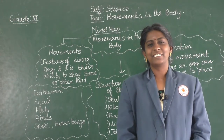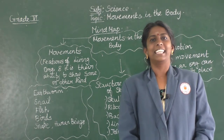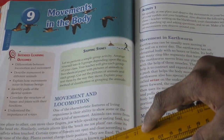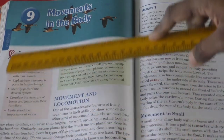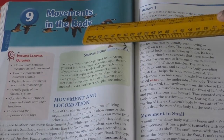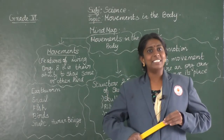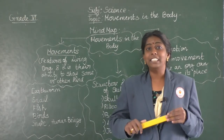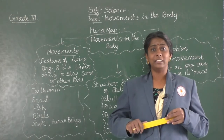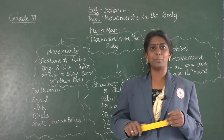Welcome back to our science class. Today we are going to learn a new chapter: Movements in the Body. Students, open your textbook at page number 134, chapter number nine, Movements in the Body. One of the main features of a living organism is the ability to show some movements. We are going to learn about that, starting with the mind map.